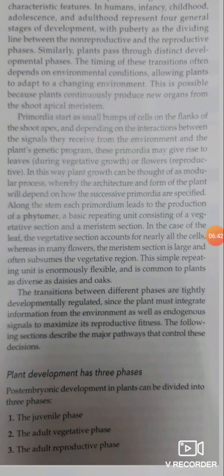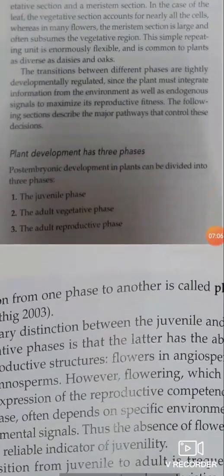The following sections describe the major pathways that control the flowering. Post-embryonic plant development can be divided into three phases: first is the juvenile phase, second is the adult vegetative phase, and third is the adult reproductive phase.